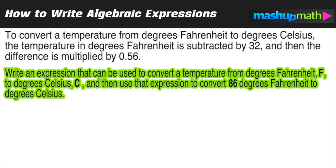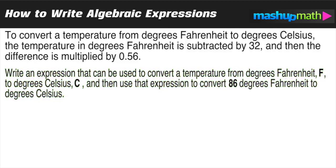Our task here is to write an expression that can be used to convert a temperature from degrees Fahrenheit F to degrees Celsius C, and then use that expression to convert 86 degrees Fahrenheit to degrees Celsius. So you have to do two things here.